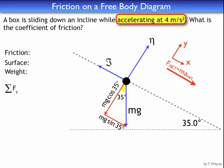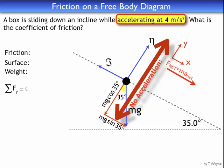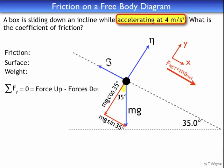Next, I sum up the forces in the y direction — perpendicular to the incline. The box is not accelerating in the y direction; it's not going off the incline, so there's no acceleration, which means the sum equals zero. All forces going up off the incline minus all forces going into the incline equals zero. That gives: normal force minus mg cosine 35 equals zero, so the normal force equals mg cosine 35.